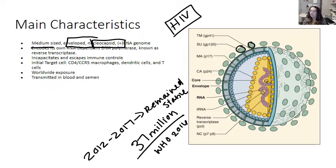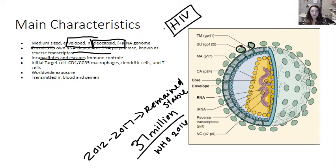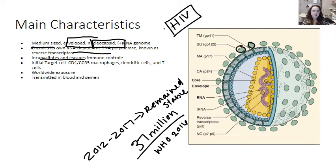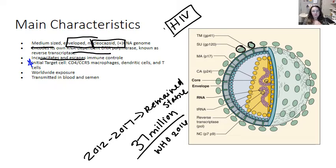One important thing about HIV is that it encodes its own RNA-dependent DNA polymerase, known as reverse transcriptase. The reverse transcriptase for HIV is one of the major targets for many of our antiretroviral therapies. Incapacitating the reverse transcriptase inhibits the virus from replicating its genome.